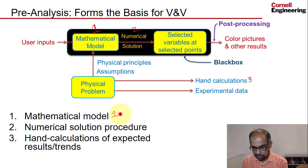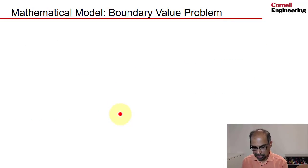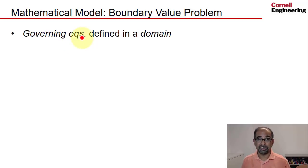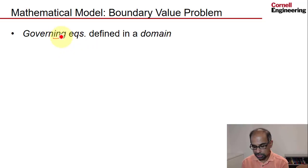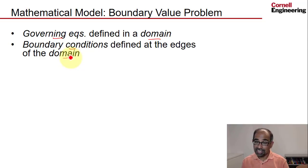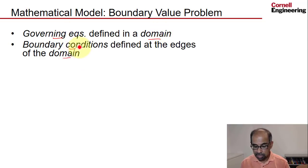The mathematical model is a boundary value problem. A boundary value problem consists of governing equations defined in a domain and boundary conditions defined at the edges of the domain. You need three things to define a boundary value problem: governing equations, boundary conditions, and a domain.